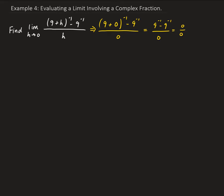So from here, what we need to do is use some algebra to rewrite this function. Let's first rewrite this part: this is nothing more than one over nine plus h minus one over nine, all divided by h. So this is what we call a complex fraction, and we need to go ahead and simplify this a little bit more.